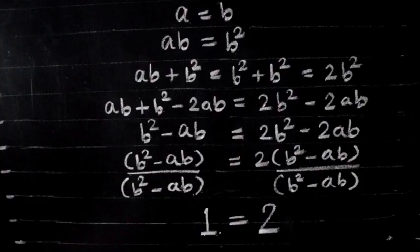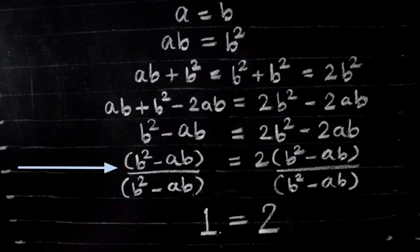Everything is fine and valid as per the rules, except this last step where we divided both sides with b² - ab.